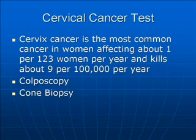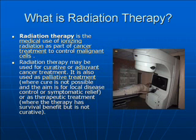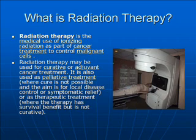Treatments for cancer include, but are not limited to, radiation therapy, surgery, chemotherapy, hormone therapy, and individual cancer drugs. Radiation therapy is the medical use of ionizing radiation as part of cancer treatment to control malignant cells. Radiation therapy may be used for curative or adjuvant cancer treatment. It is also used as palliative treatment where the cure is not possible and the aim is for local disease control or symptomatic relief, or as therapeutic treatment where the therapy has survival benefit but is not curative.